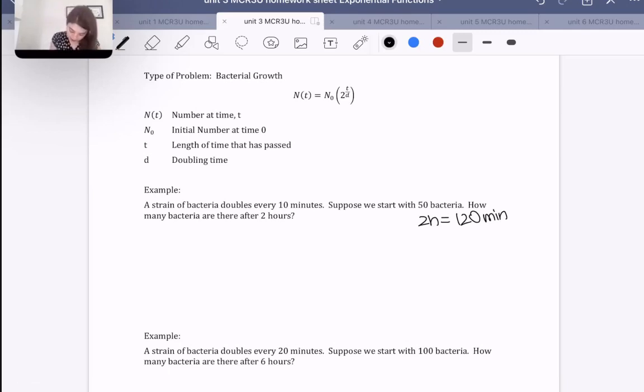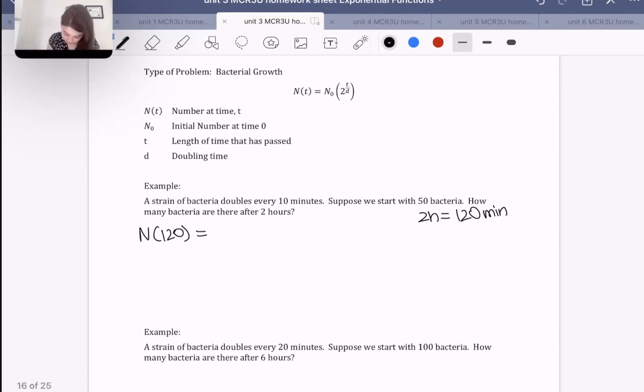Let's answer this one. We want to know how many bacteria are there after 120 minutes. So what we're looking for is N of t, or in this case N of 120. Suppose we start with 50 bacteria, so that means there's 50 bacteria at time zero, that's N naught. Length of time that has passed, well 120 of course. And the doubling time, well it takes 10 minutes for it to double. Therefore, if it takes 10 minutes to double, in 120 minutes it's going to have doubled 12 times, not 120 times, because it only doubles once after every 10 minutes. Basically they're saying, per 10 minutes, how many minutes do we have? Well, we have 12 10-minute periods in 120 minutes.